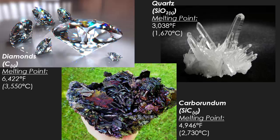Some examples of network solids are diamonds, seen in the top left-hand corner. After they're cut, diamonds give off brilliance — a rainbow effect of light. Their melting point is around 6,422 degrees Fahrenheit, which is incredibly hot and the highest of the three examples.